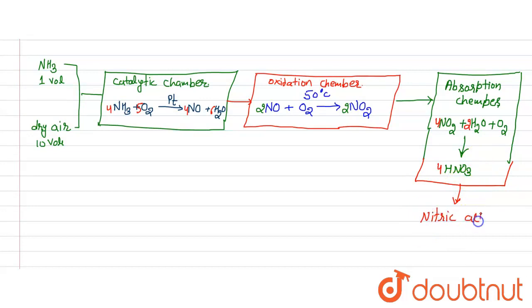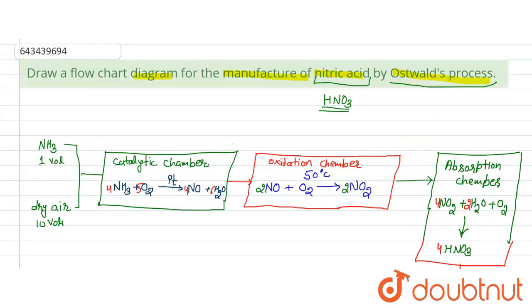This is the total procedure for the formation of nitric acid. The nitric acid is collected as the final product. This is the flow chart for the manufacturing of nitric acid by the Ostwald process.